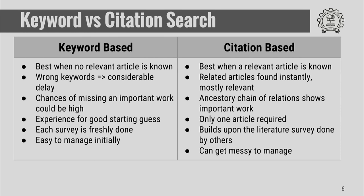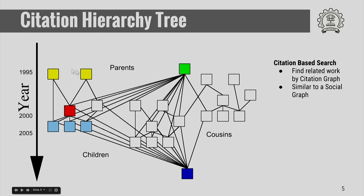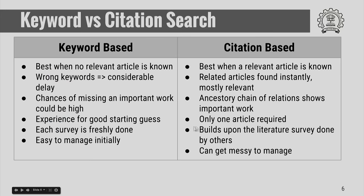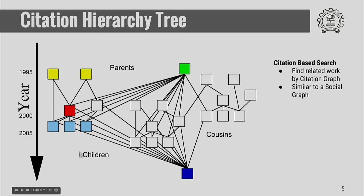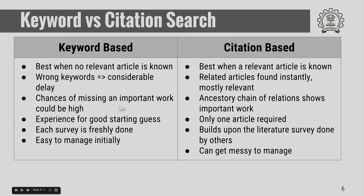When you have a related article with a particular citation, all related articles are easily found by the search engines using the graph. In keyword-based search, it is very possible that you miss an important work — for example, the red article could have missed another article because they did not share a common keyword. However, in citation-based search, that article is also found because they share a common parenthood. For keyword-based search, you need some experience in providing good keywords, as very broad keywords will give you very broad results.